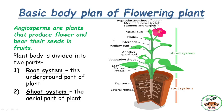For that we should know what the flowering plants are. Flowering plants are the angiosperms. Angiosperms are the plants that produce flowers and bear their seeds in fruits.